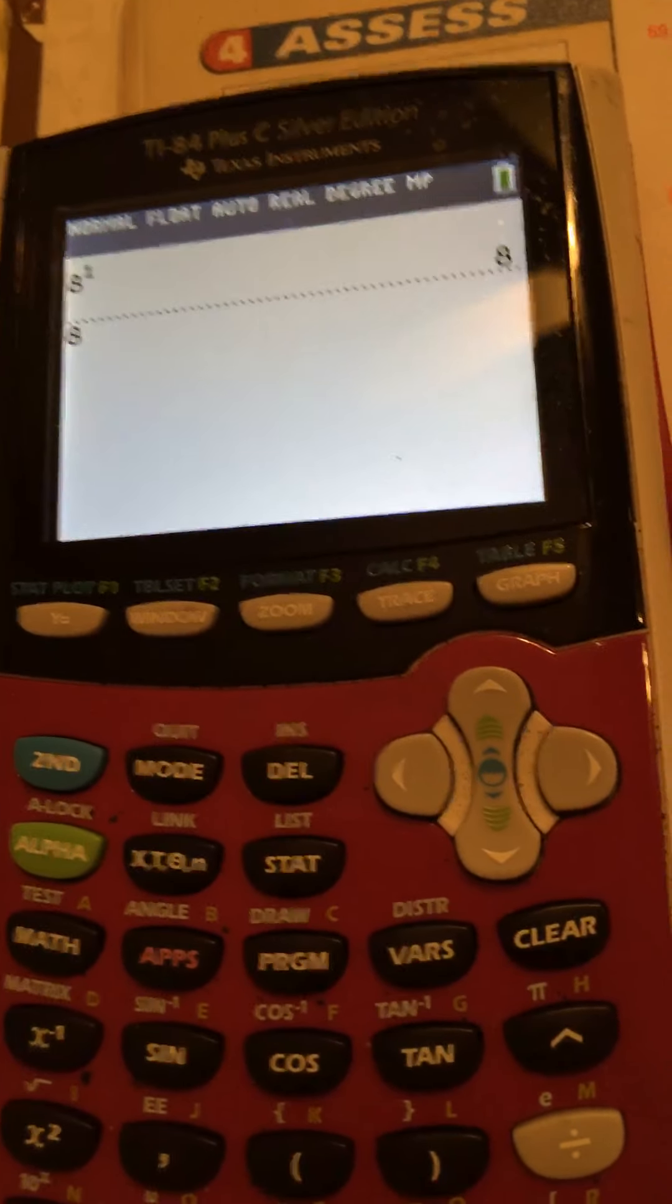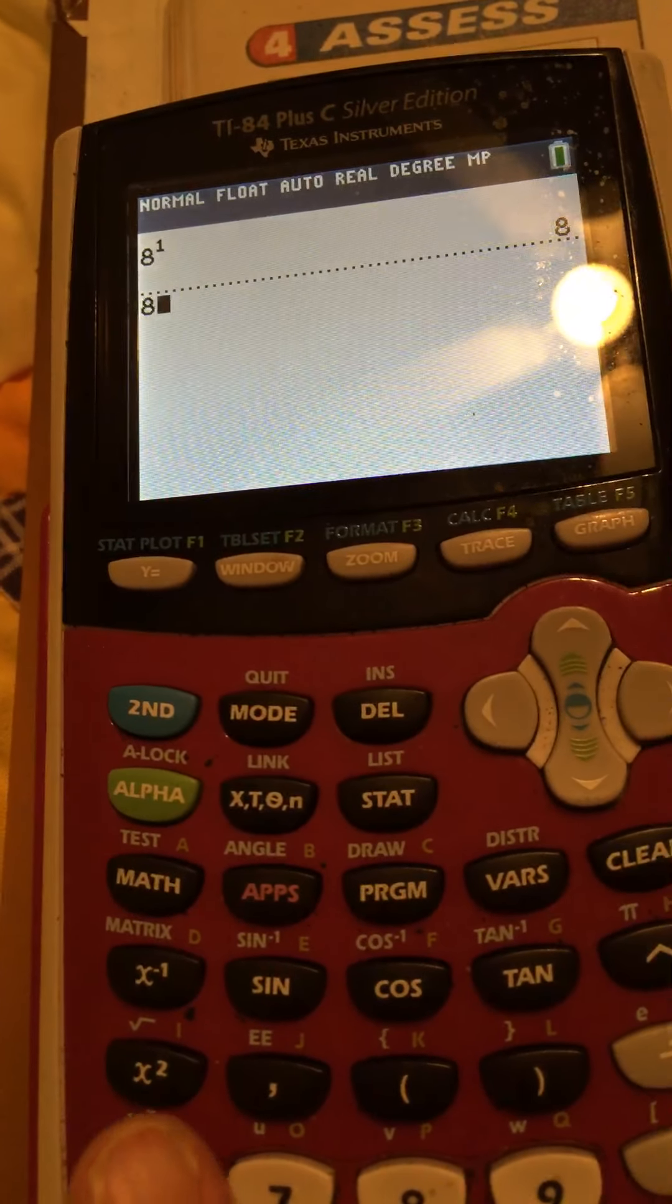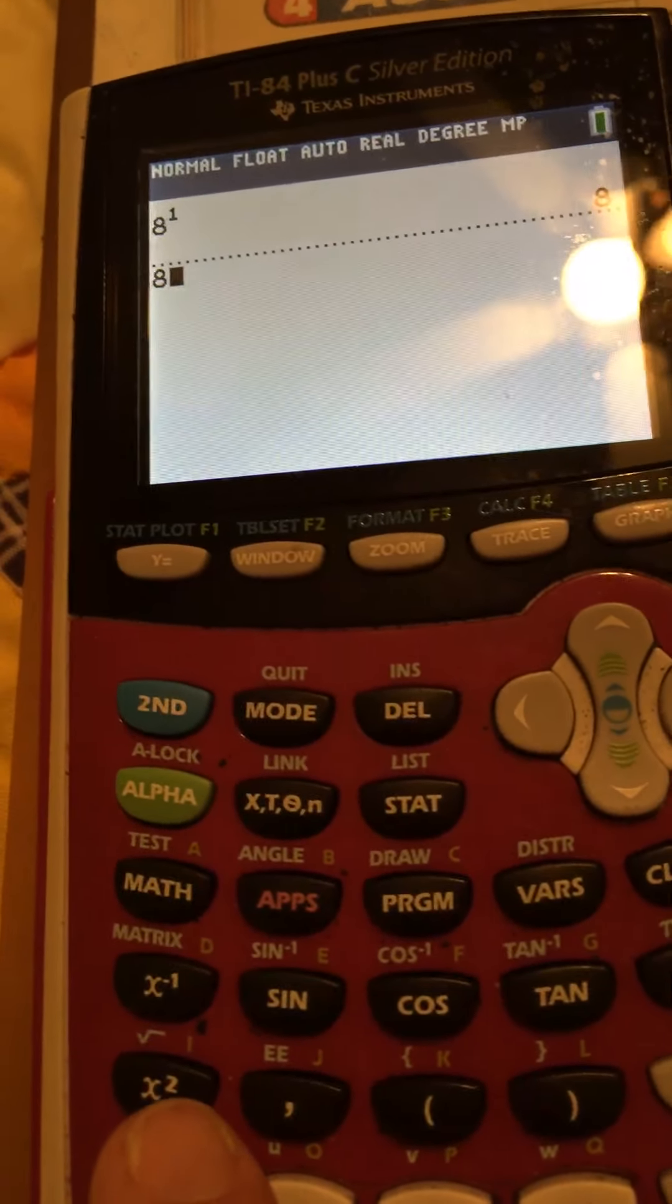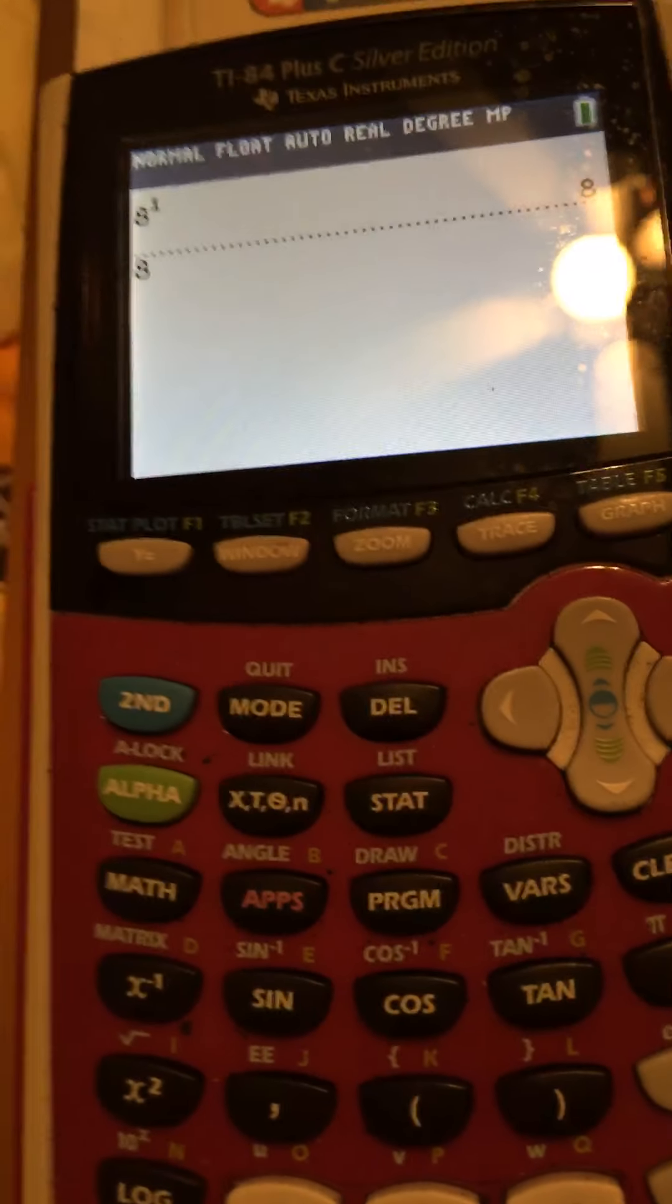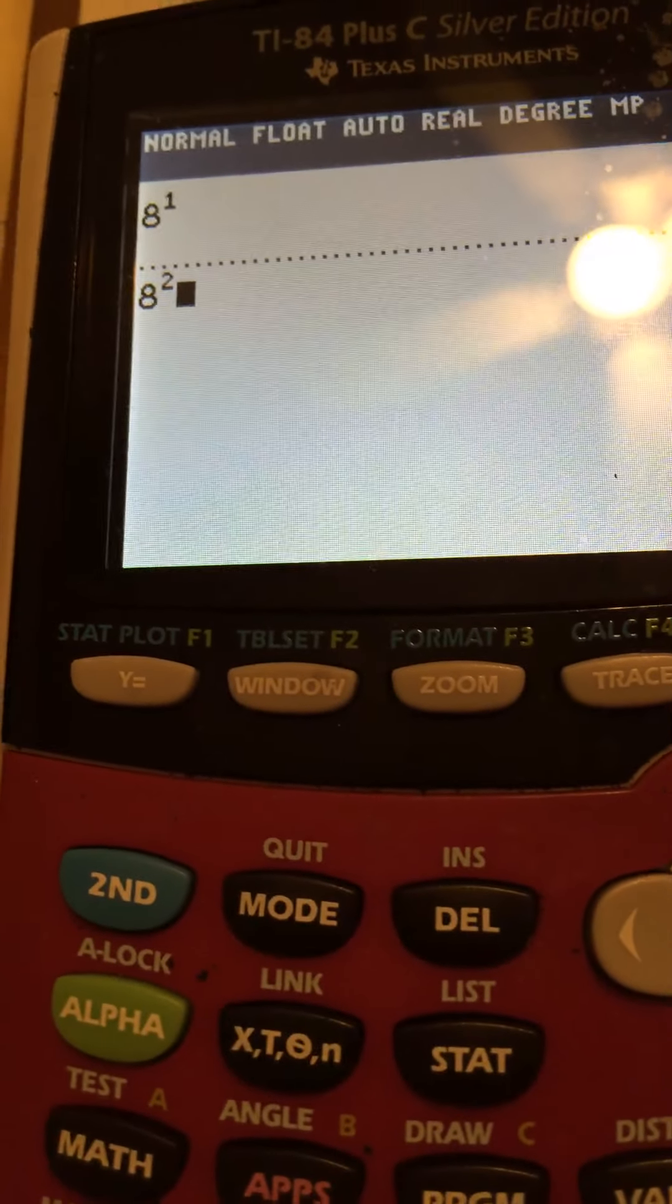Squared is just the most common exponent to use. So in common, it has its very own special button. It's right there. See where my finger is? X raised to the second power. Whenever it's squared, I want you to use that button. And see how that, I just pressed it, and there's the squared.